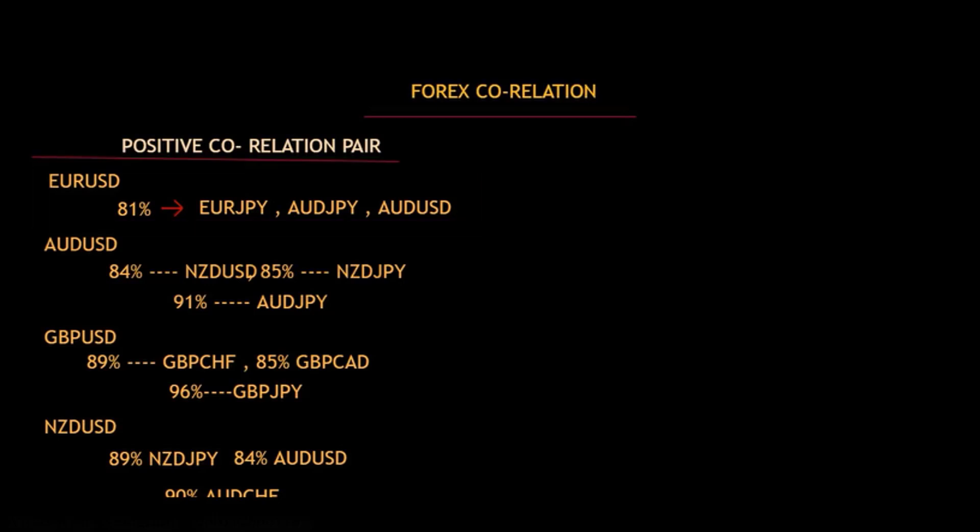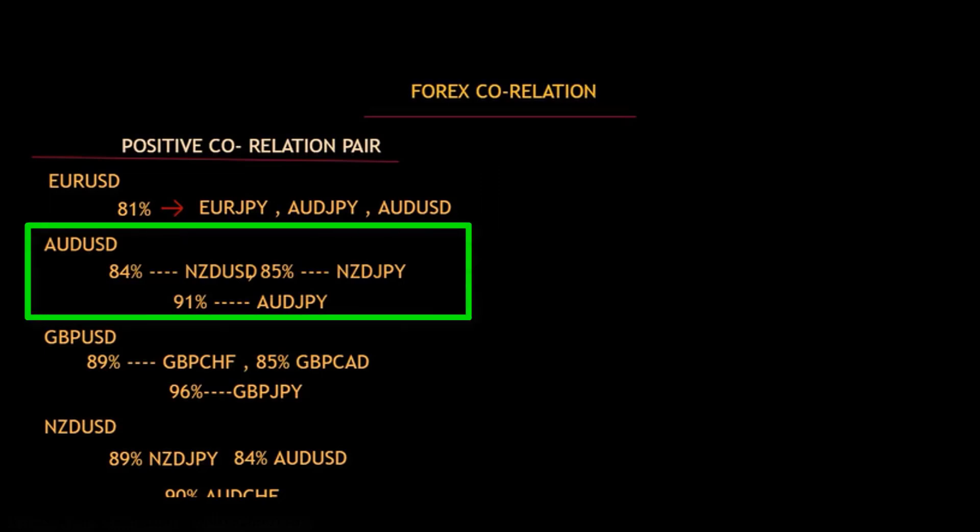So euro/USD, euro/JPY, AUD/JPY, and AUD/USD are all positive — when euro/USD is up, there is about 80% chance the other three pairs will also go up. Then AUD/USD has 84% correlation with NZD/USD, meaning if AUD/USD goes up then NZD/USD will go up with 84% correlation. There is also 85% positive correlation with NZD/JPY, and 91% correlation with AUD/JPY. Since AUD/USD and AUD/JPY have the highest correlation, we can compare these two pairs all the time.